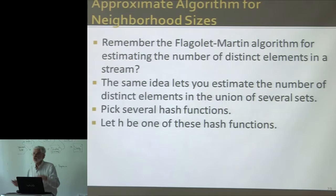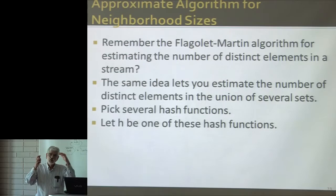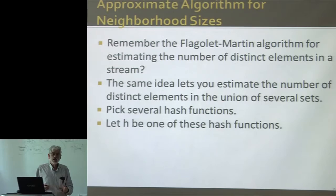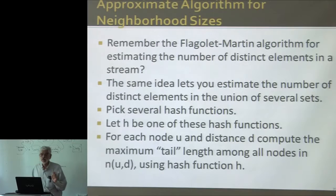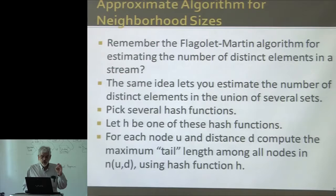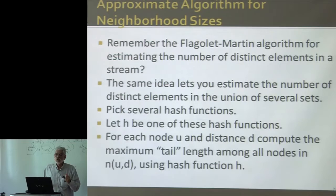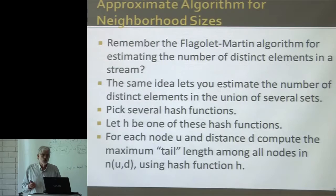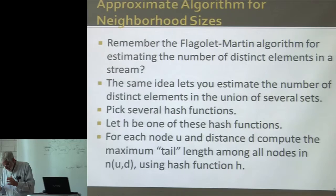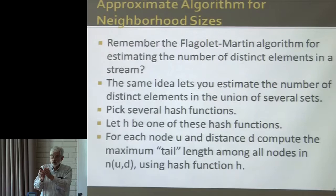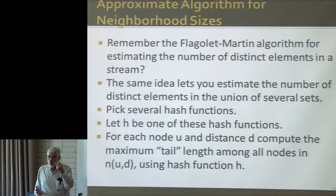You combine those estimates using averages within small groups and then the median of all the groups to get the true estimate — and the more hash functions you use, the closer you're going to be. For one hash function h, to get an estimate of the size of the neighborhood of some node u at distance d, you want to compute the maximum tail length — the maximum number of trailing zeros in the hash value — among all the nodes in that neighborhood. The nice thing about the Flajolet-Martin idea is: if you're taking the union of 300 neighborhoods and a node appears in 10 of them, its tail length only counts once, because you're just looking for the maximum.